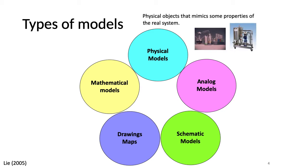Physical models are physical objects that mimic some properties of the real system. For example, laboratory models, pilot plants, and full-scale models.